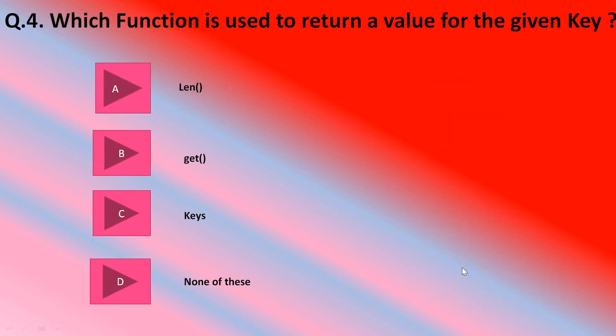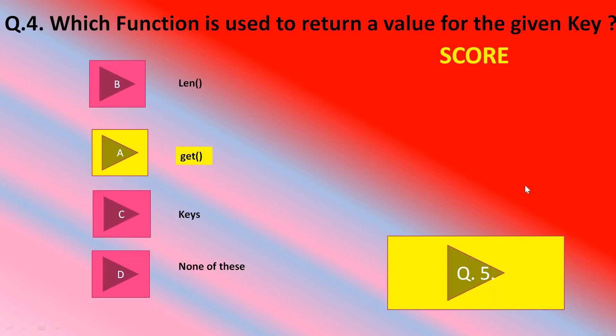Now let us move to question number 4. Which function is used to return a value for the given key? Length function, get function, keys, or none of these. Yes. Wrong. B part, correct. Get function is the correct answer if you want to get the values of a given key. Now let us move to question number 5.